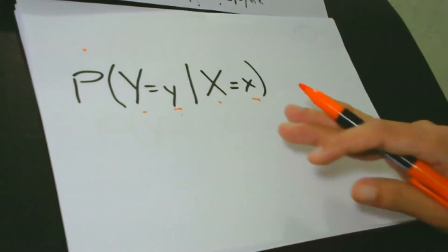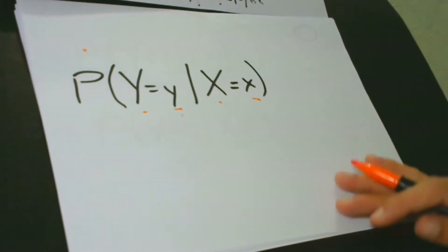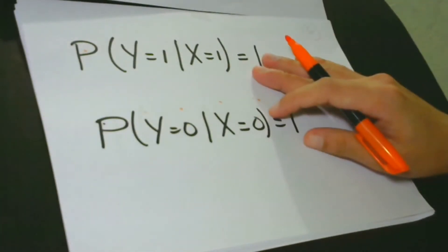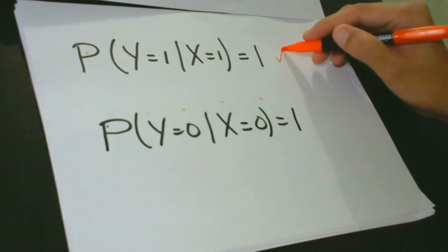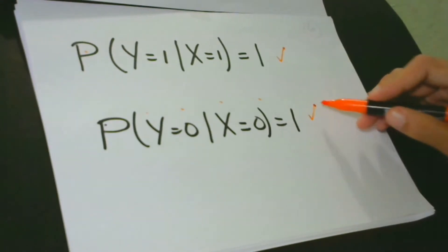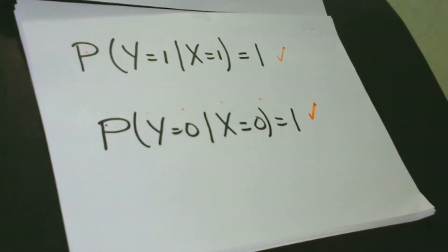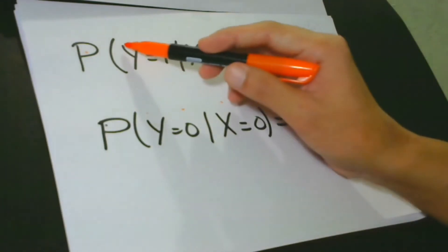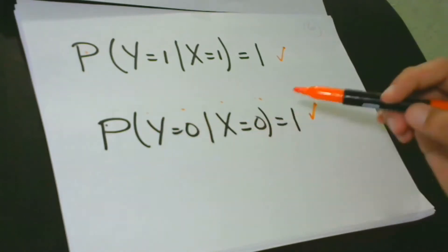The assumption in our example is that I am telling the truth. With this, we can say that the probability that I say heads if the coin lands heads is 1. Similarly, the probability that I say tails if the coin lands tails is also 1 — they have the same probability. That means if Y is 1, it is because X is 1, and if Y is 0, it is because X is 0.